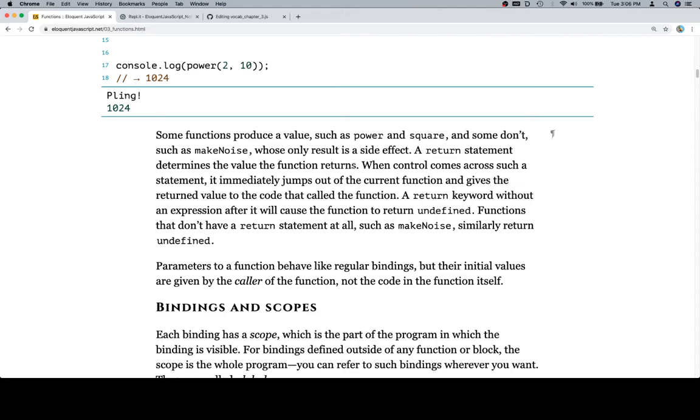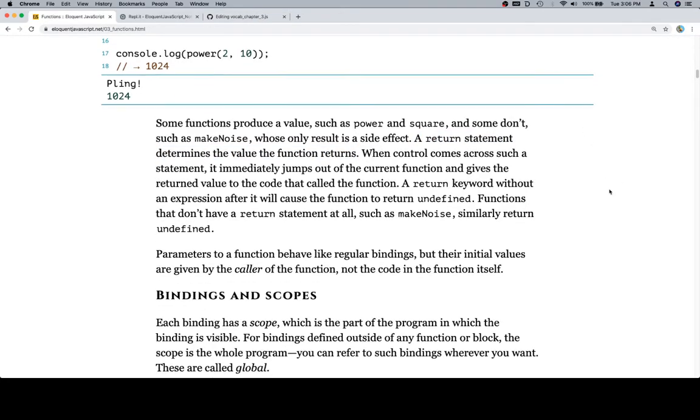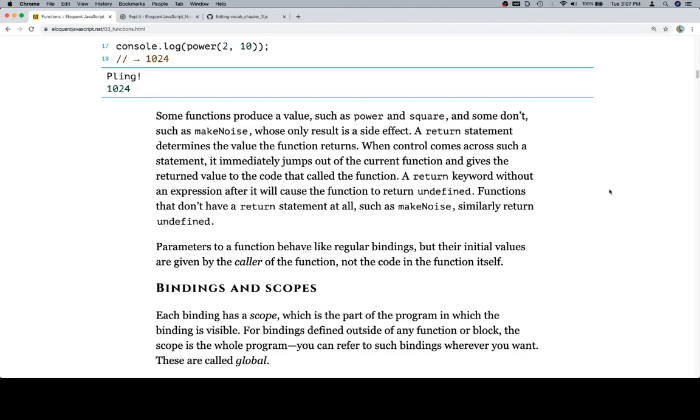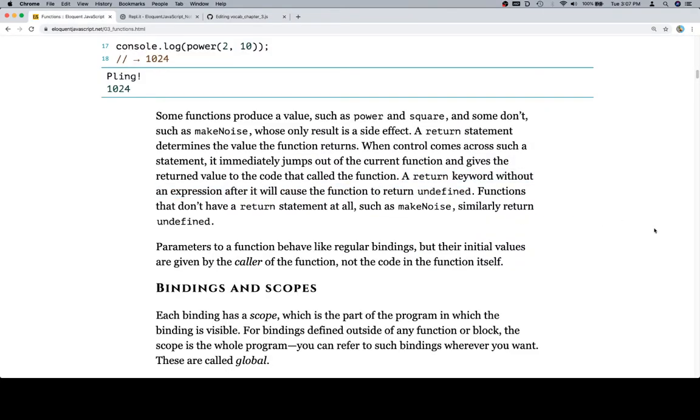A return statement determines the value the function returns. That sounds like another vocab word. So we'll say return statement. Return statement determines the value the function returns. When control comes across such a statement, it immediately jumps out of the current function and gives the returned value to the code that called the function. A return keyword without an expression after it will cause the function to return undefined.